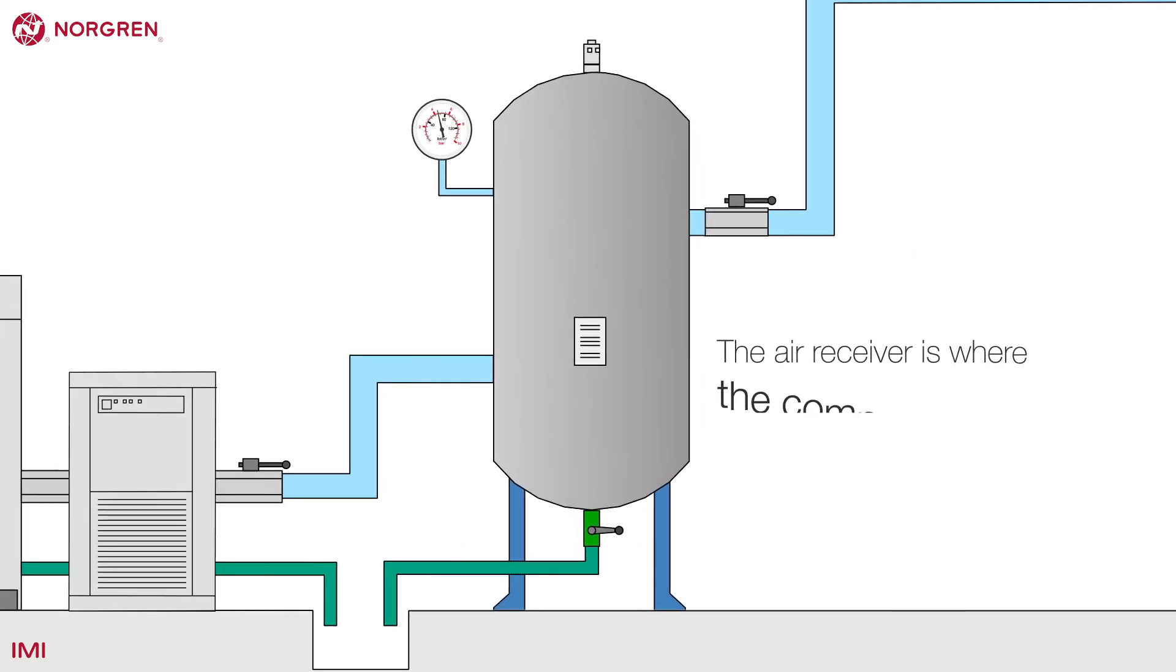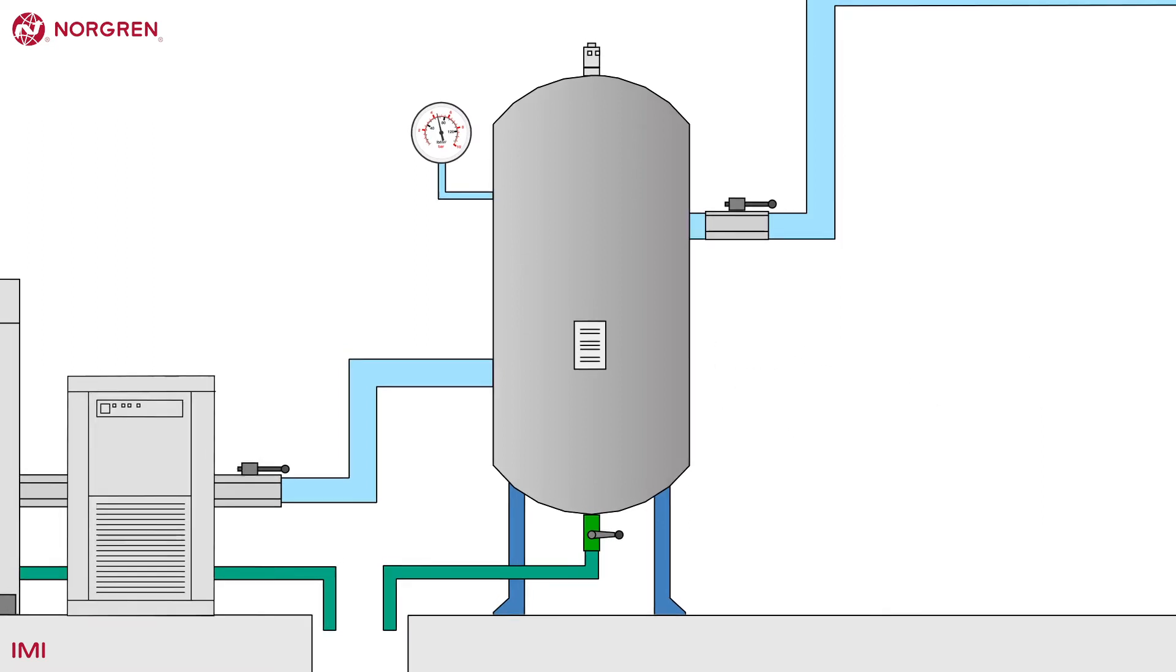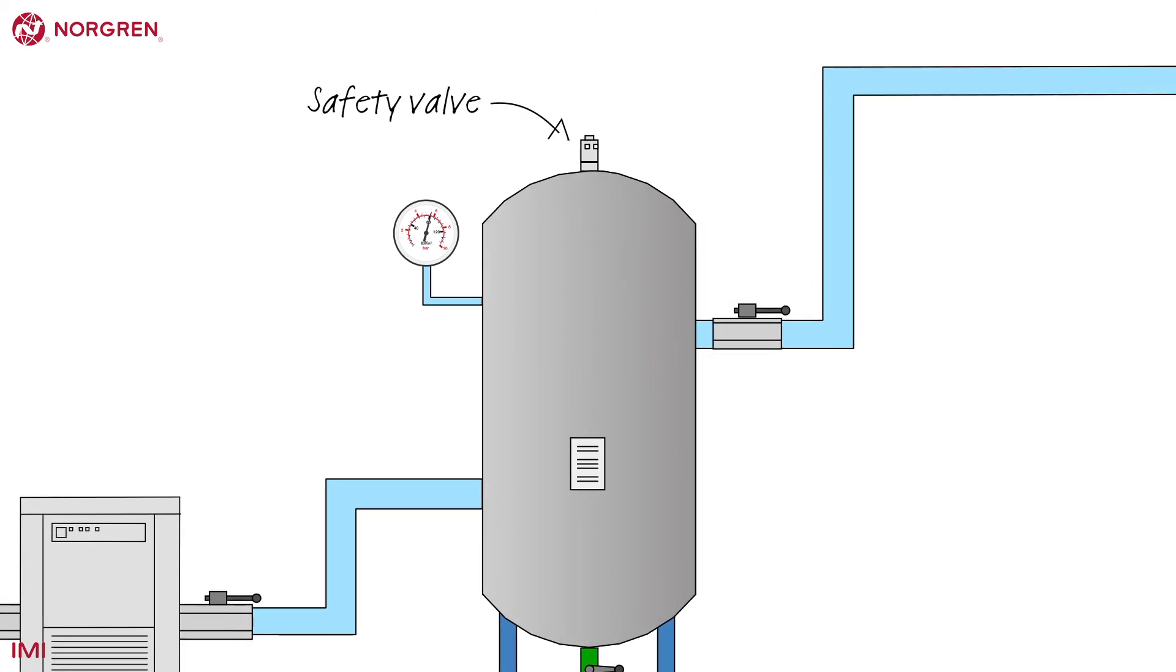The air receiver is where the compressed air is stored. Think of it as a battery. It's where the energy is stored. The safety valve will release air if the pressure rises above the set pressure, for example 10 bar. The pressure gauge displays the pressure inside the tank.